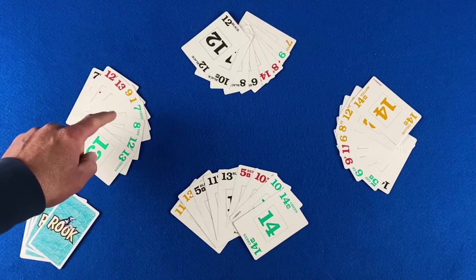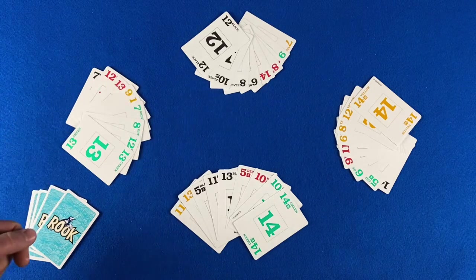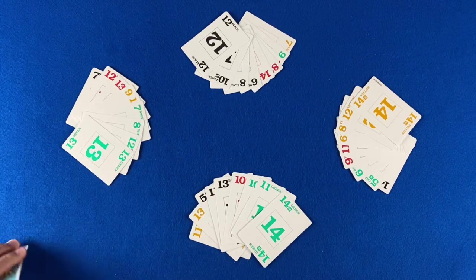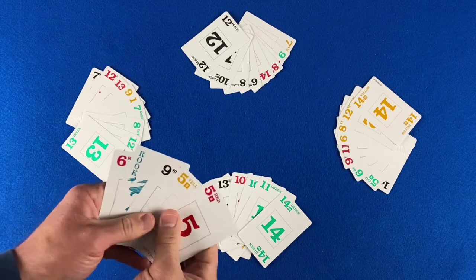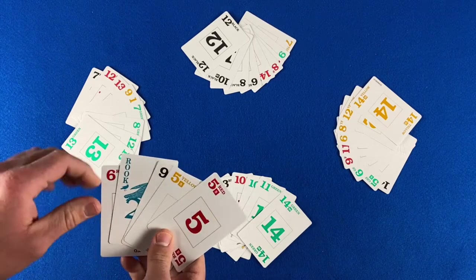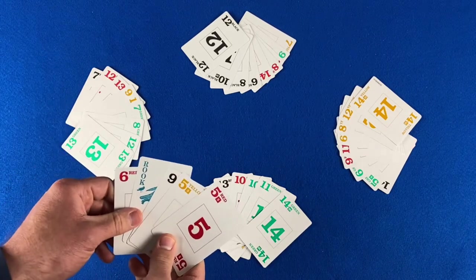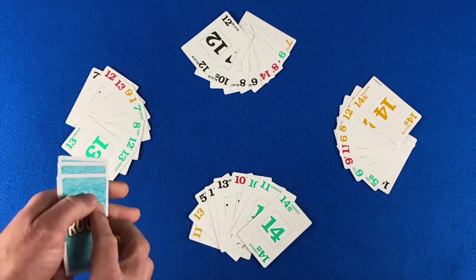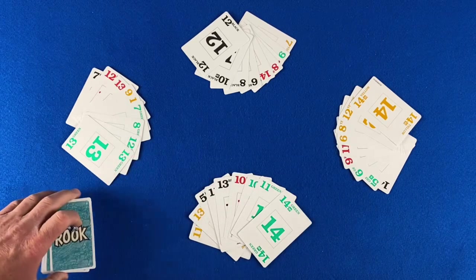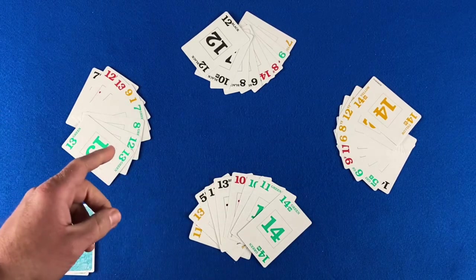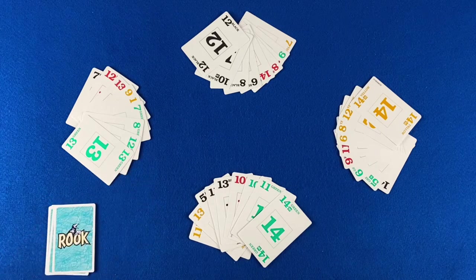Once a player passes, they cannot jump back into the bid. The winner of the bid picks up the nest and adds it to their hand. They can then choose any 5 cards from their hand to remove and place back down as the nest. Then that player determines the trump color for the round.